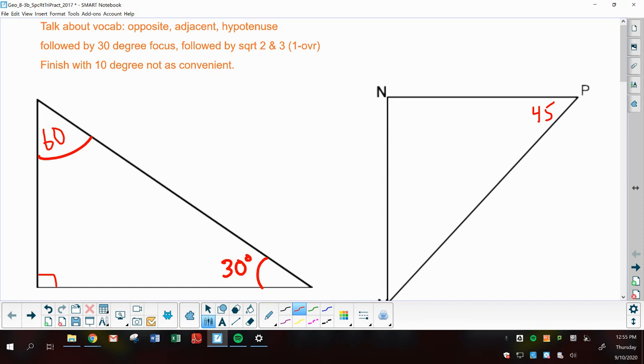30-60-90 triangles are very popular in the real world. Not quite as popular as this one here. This is a 45 and 90. So this, if you subtract from 180, will also give you a third angle of 45. This is extremely popular in the real world. These two triangles are triangles we're going to be working with.